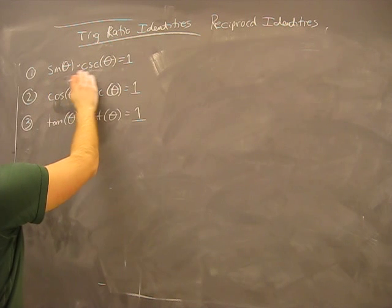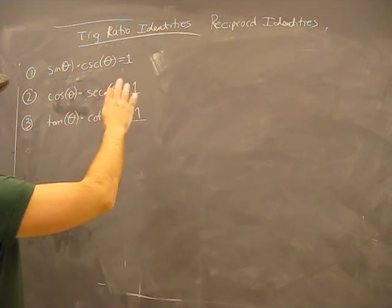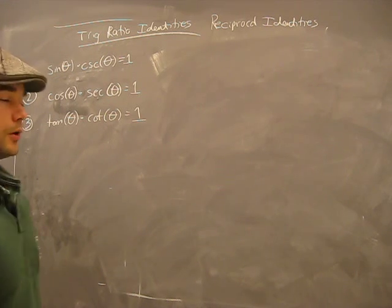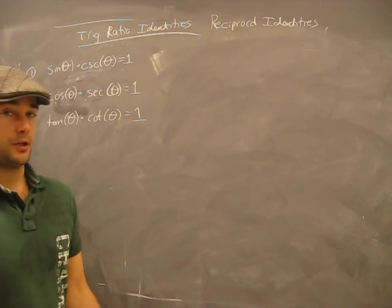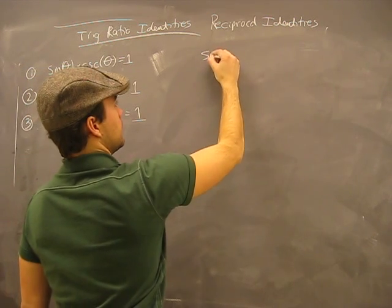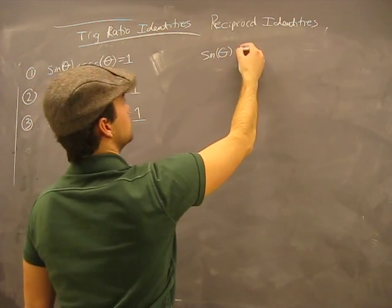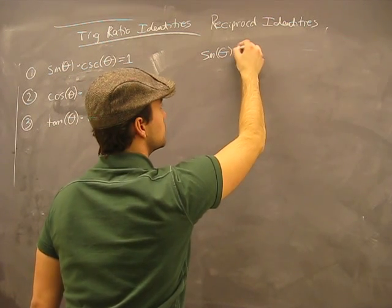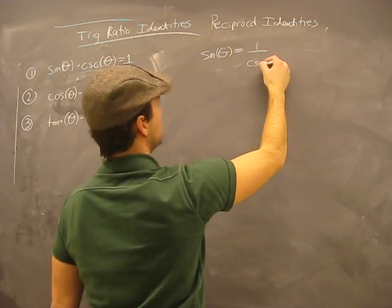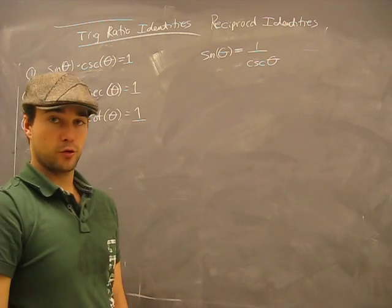Here's the first identity we need to look at: sine theta times cosecant theta equals 1. Memorize it. Here's how we know: sine theta equals 1 over cosecant theta — this we know is true.